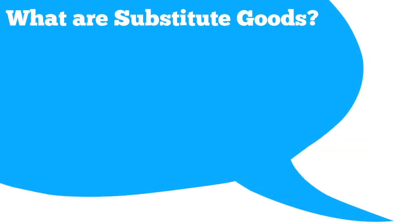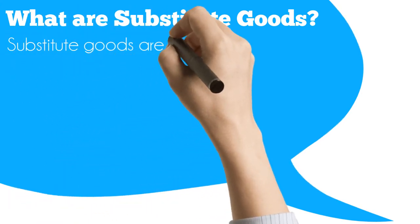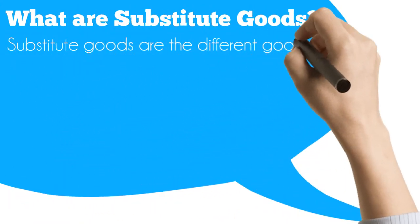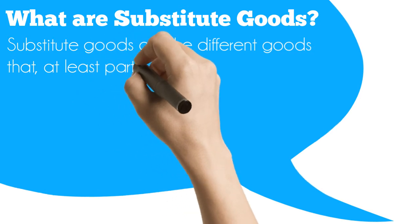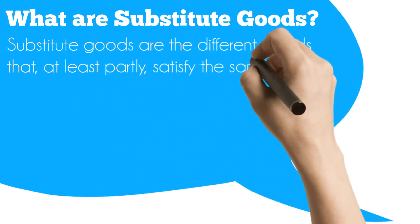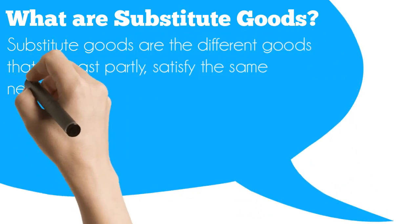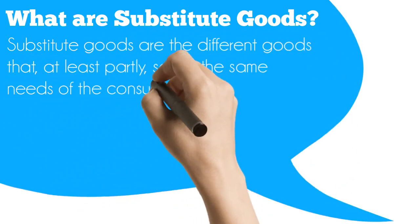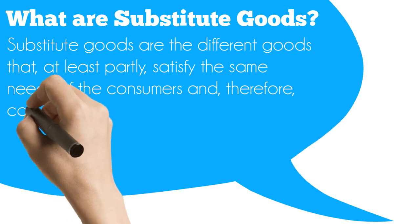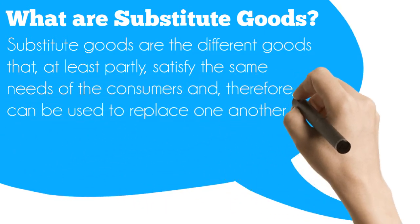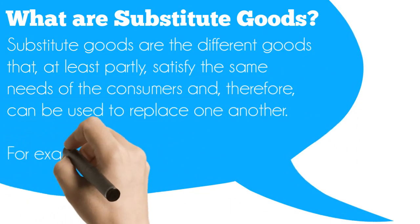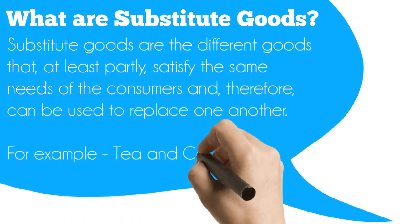What are substitute goods? Substitute goods are the different goods that, at least partly, satisfy the same needs of the consumers and, therefore, can be used to replace one another. For example, tea and coffee, Coca-Cola and Pepsi.